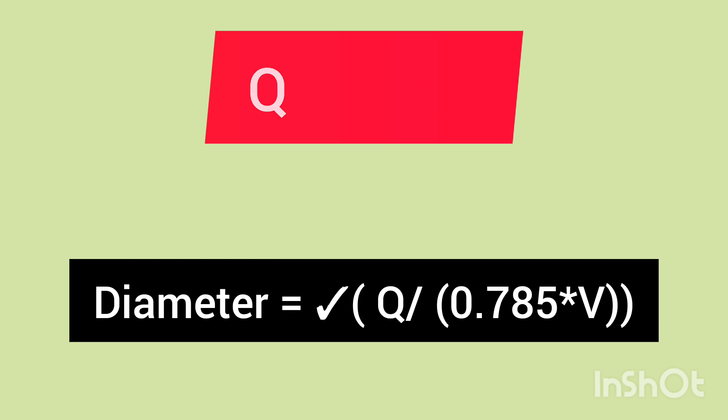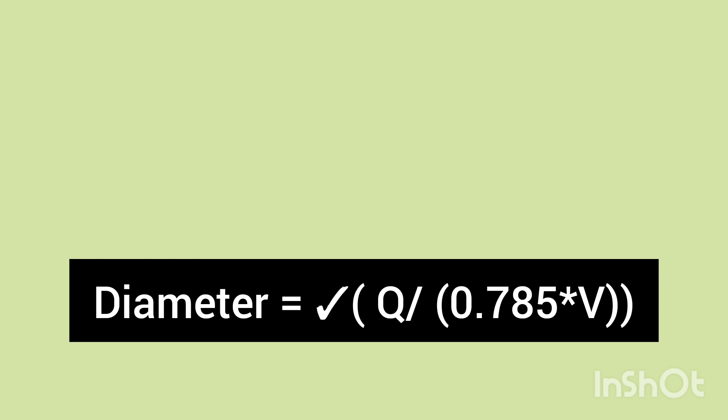So let's start with the example. Calculate required diameter for a water pipeline having flow of 0.1 meter cube per second. In this example we have already taken the flow rate in meter cube per second. If your flow rate is in meter cube per hour, you can convert it into meter cube per second.